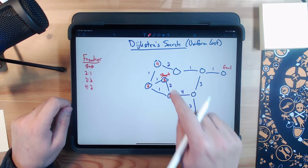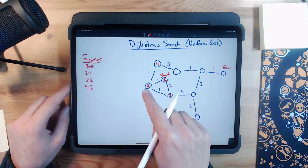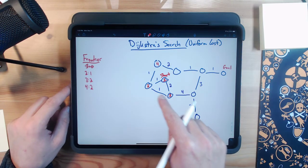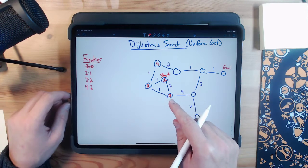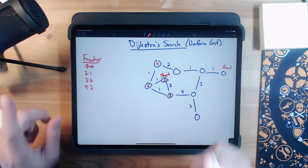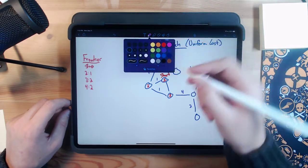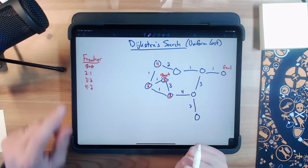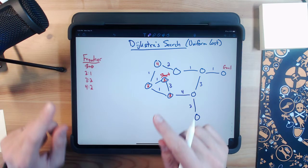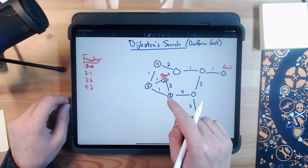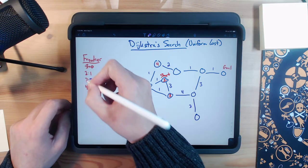An interesting point about this: our start node added node three with a value of two. If we go through node two over here, it also has a value of two. Previously with breadth-first search, we would just disregard this connection because node three is already in our frontier. In the situation where the node has a lower connection than previously in there... So I just updated this cost here, this edge weight to have a value of three, which means that when our start node put node three in, this value here would have a value of three.